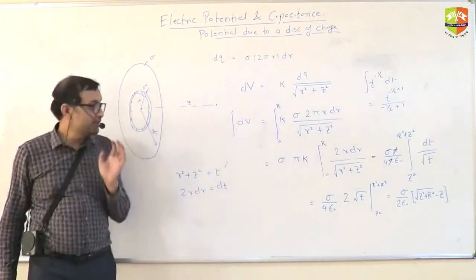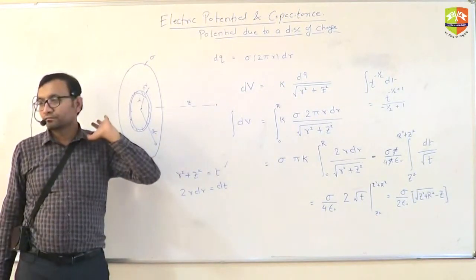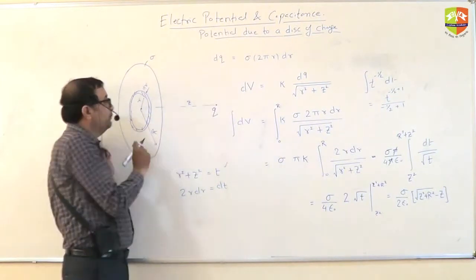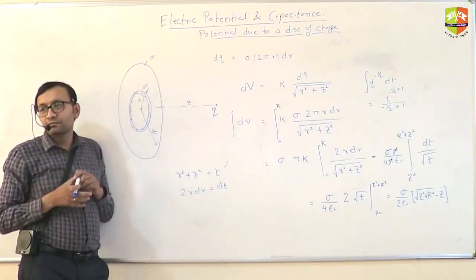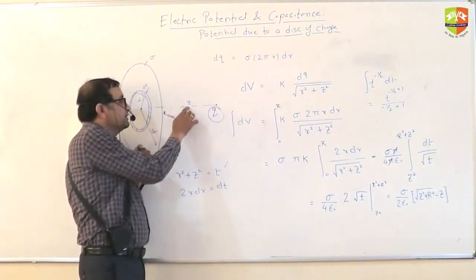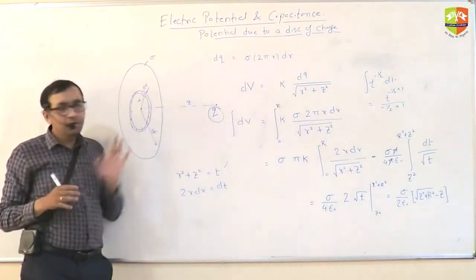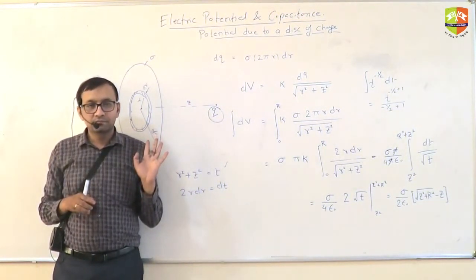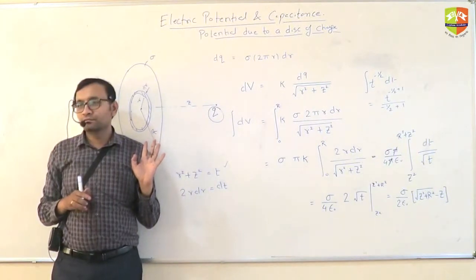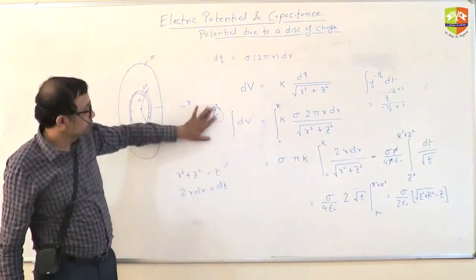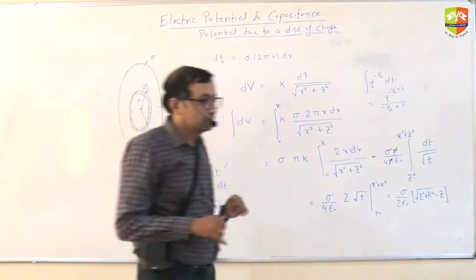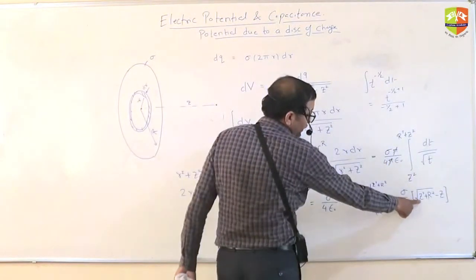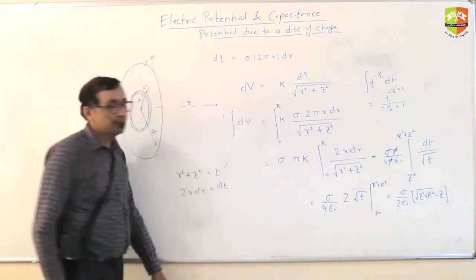under root z square plus r square minus z. That is the potential due to the disk. So, if I keep a small charge q over here, what will be the potential energy between this and that? If I keep a small q at a distance z from the disk, what will be the potential energy? That into this. Same for this. You can see that, when you are putting z equal to 0 over here, the formula changes to sigma-arboric-dumshelm formula.